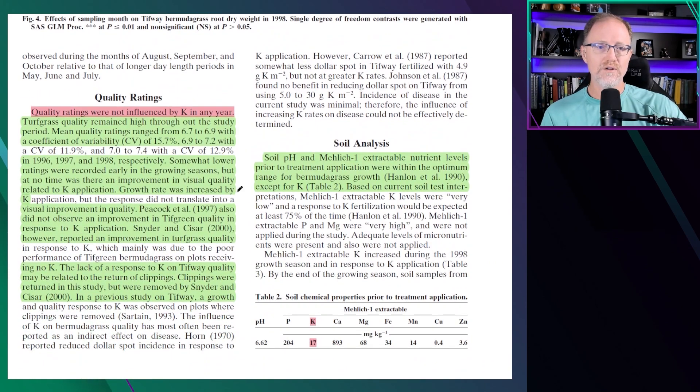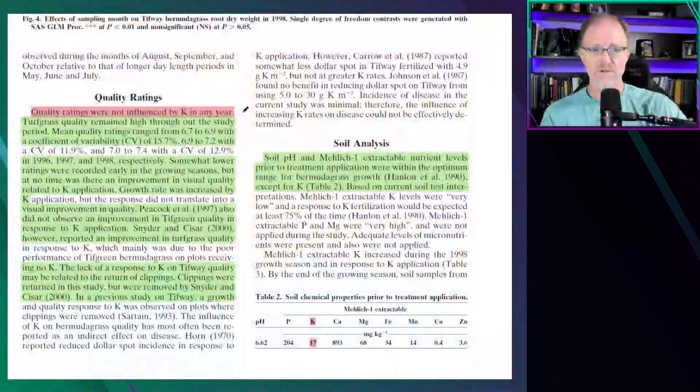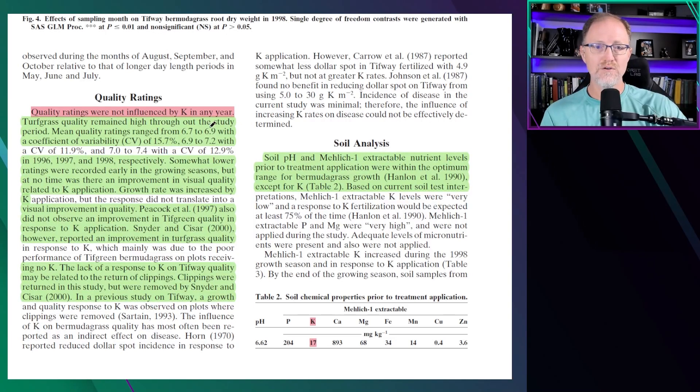Now we go to the quality ratings. The quality ratings were not influenced by potassium in any year. So we talked about shoot growth rate being influenced—there was a difference in growth rate—but the quality was not influenced by potassium in any year. They remained high throughout the study. Mean quality ratings ranged from 6.7 to 6.9. So they were acceptable and there was no influence on turfgrass quality with regards to the amount of potassium on a low-K soil varying from no potassium all the way up to 7.5 pounds of potassium per year.